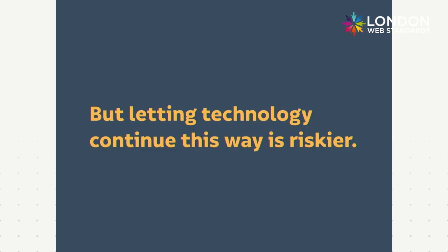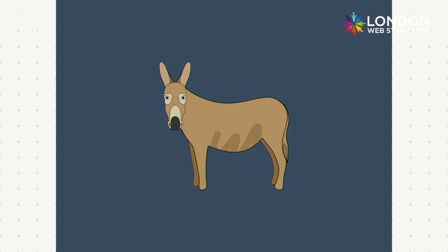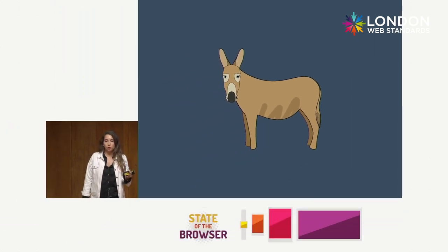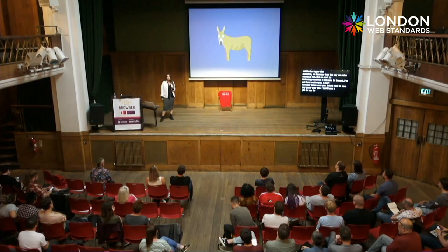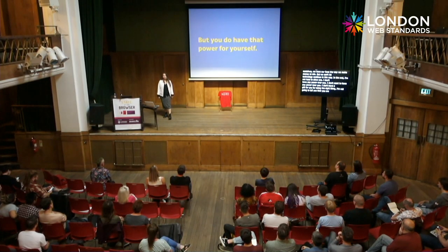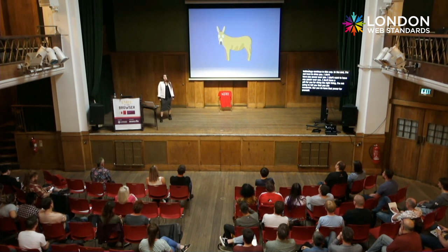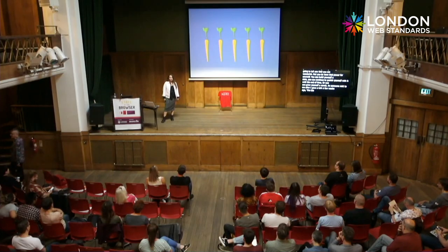We can't let technology continue in this way. I'm not here to drive you — I don't have any power over you, and I don't want to have power over you. I don't have a gift for you for doing the right thing. But you do have that power for yourself. You can build yourself a stick and continue to punish yourself with it, or you can grow yourself a carrot. I'm here because I want to tell you that you deserve better. Thank you.